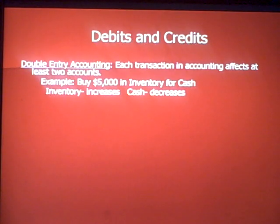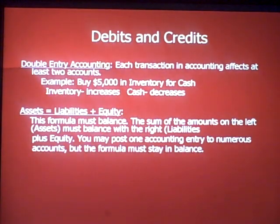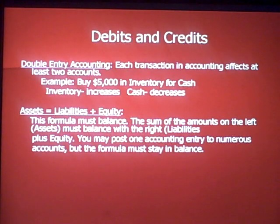Debits and credits. There's a term called double-entry accounting — each transaction affects at least two accounts. For example, you buy five thousand dollars in inventory for cash: inventory increases, cash decreases. The formula from the balance sheet — assets equals liabilities plus equity — must always balance. Even if you post one entry to ten or twelve accounts, the amounts on each side of the equal sign must balance.